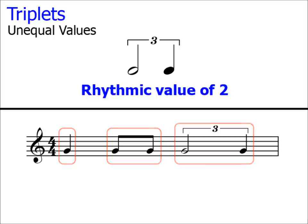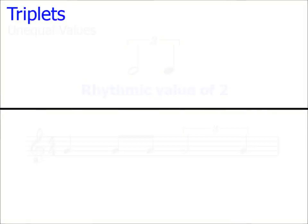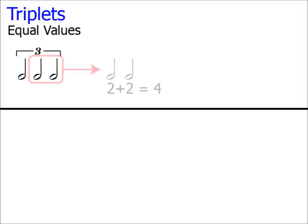Now I could go on providing example after example and there are endless examples, but it is more about practice with triplets. Remember, if the values of the triplet are equal, like this set of triplet minims or half notes, it's very easy to work out the total value of the triplet. Just take two of them, sum them together and that gives you the rhythmic value of the triplet.